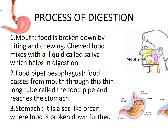The food then passes through the food pipe. This long thin tube is the food pipe and it reaches the stomach. The stomach is a fat-like organ that is closed at both ends. The food is further broken down in the stomach.